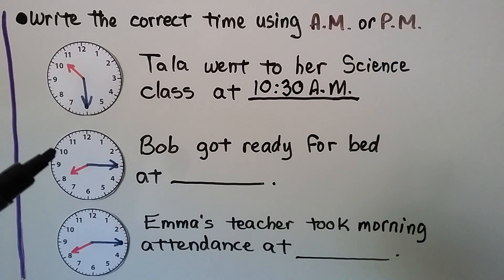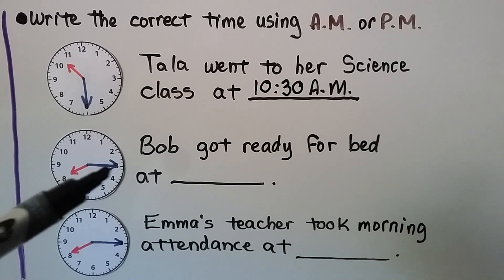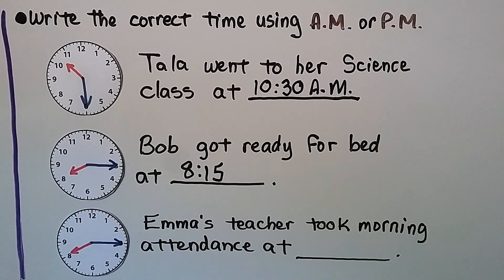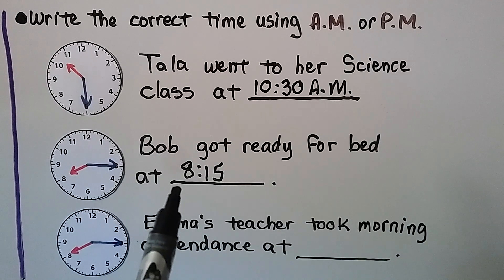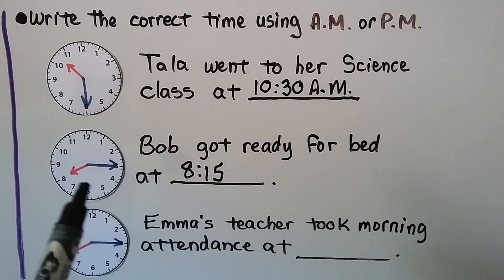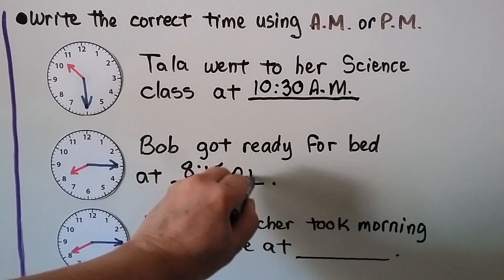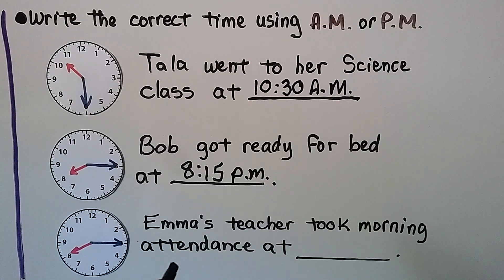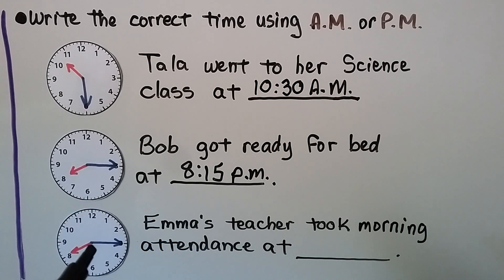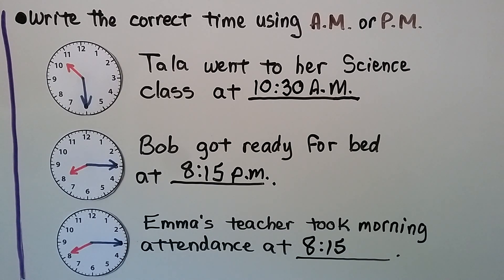It says Bob got ready for bed at — the hour hand is at eight and the minute hand: we start at zero, 5, 10, 15 — the time is 8:15. If he got ready for bed, he's going to go to sleep, and he wouldn't go to sleep at 8:15 in the morning, so it must be 8:15 P.M. Emma's teacher took morning attendance — the hands are in the same place so we know it's also 8:15. It says morning attendance, and that's our clue — for morning we use A.M. So that would be 8:15 A.M.